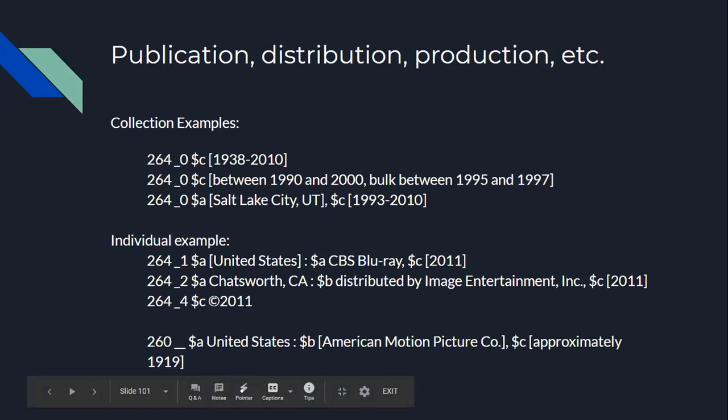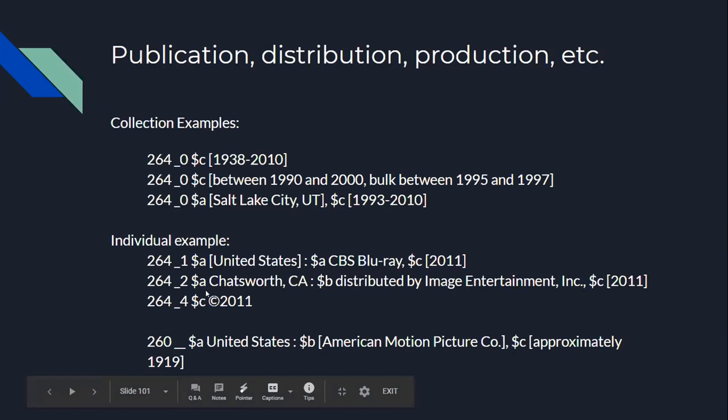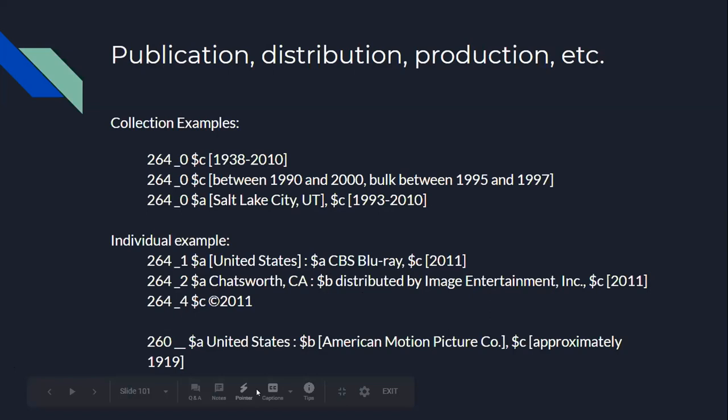For collections with a range of dates, you can include just the range itself, or also include additional years for the bulk of the collection. Examples for individual items show publisher, distributor, and copyright as separate fields. Under AMIM, you record the country, such as United States, then the publisher and an approximate publication date.